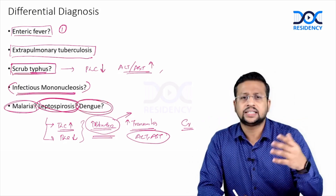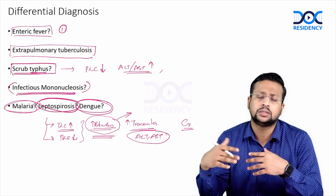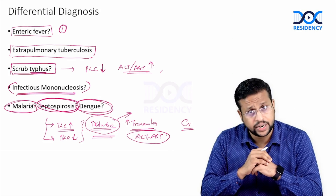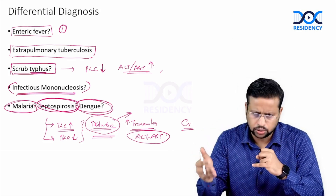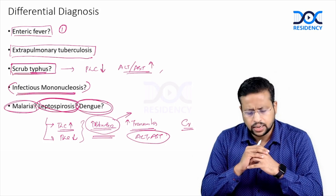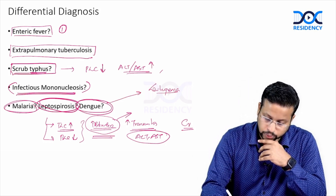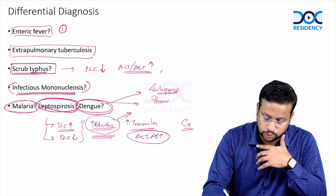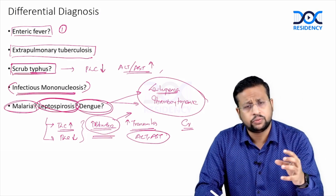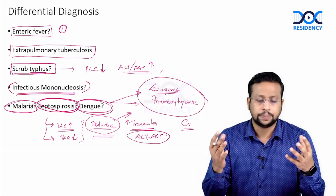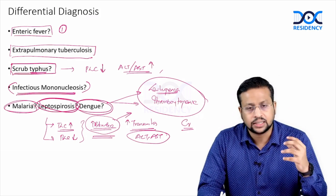Can it be dengue? Dengue fever usually lasts for about 5 days, maximum 7 days — it doesn't go beyond that. Given the 12-day duration of illness, dengue is unlikely. Furthermore, in dengue we typically expect leukopenia and significant thrombocytopenia, neither of which is present here. Considering the duration of illness, lack of leukopenia, and lack of thrombocytopenia, dengue fever is not a differential in this particular patient.